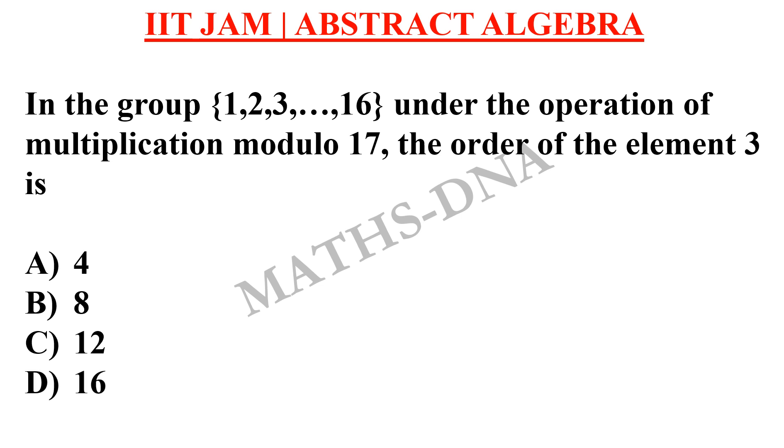We will use congruence modulo to solve this question. Let us begin. We know that 3³ ≡ 10 (mod 17), because 3³ = 27 and when modulo 17 is taken, 10 is the remainder.